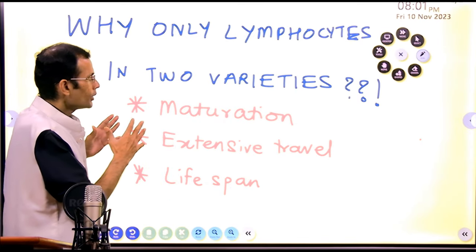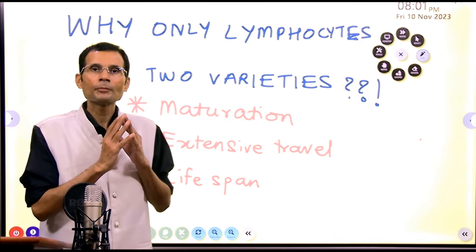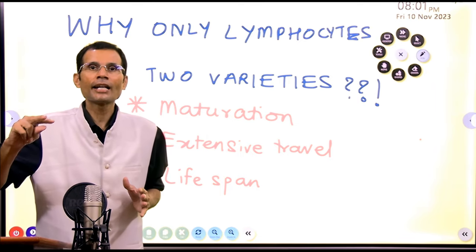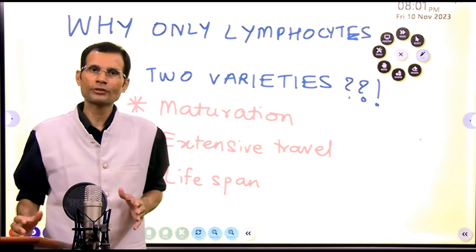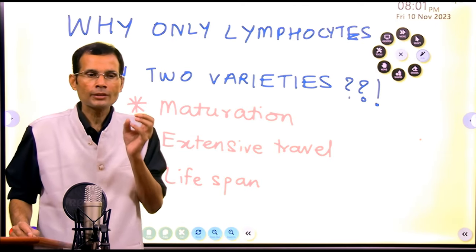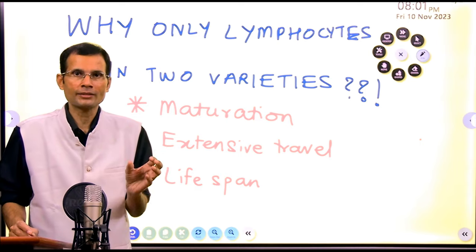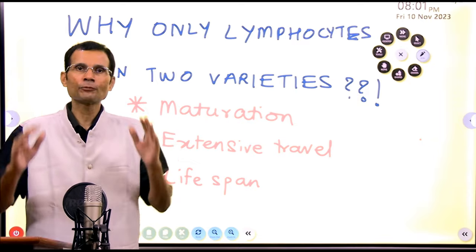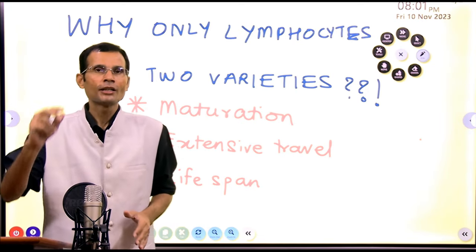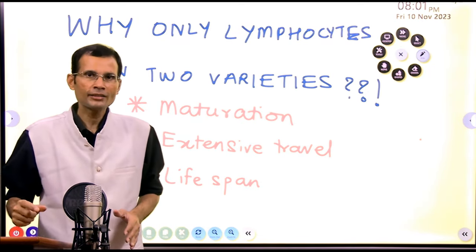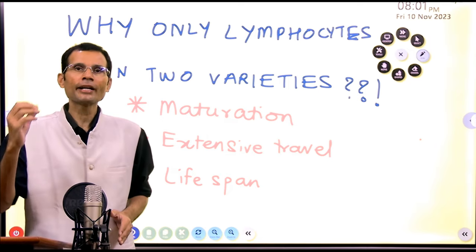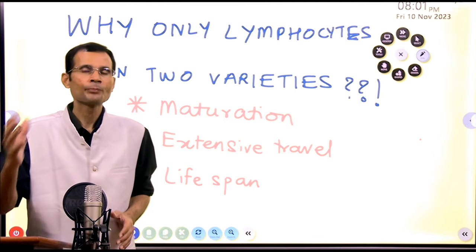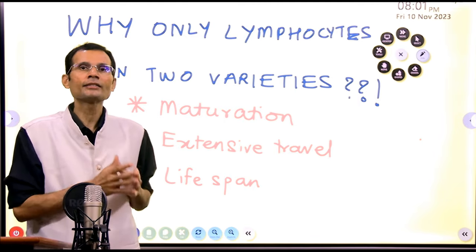Now the question is: what are small and large lymphocytes? These are the developmental stages of lymphocytes. The lymphocyte, or the lymphoblast — the precursor cell — enlarges and then divides into two smaller lymphocytes. So the point to be noted is: a smaller lymphocyte is an older, more mature lymphocyte, and a larger lymphocyte is a little younger.